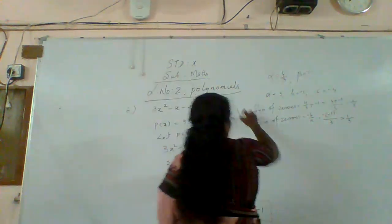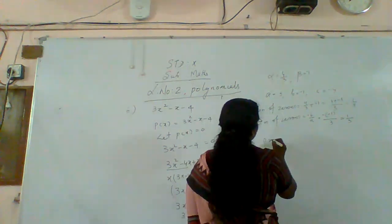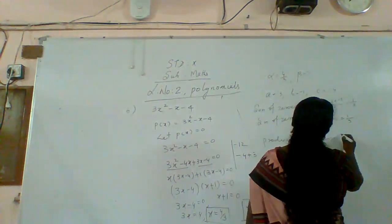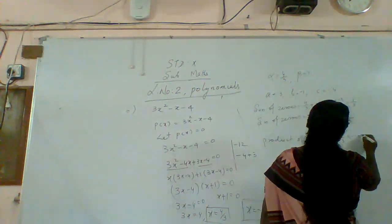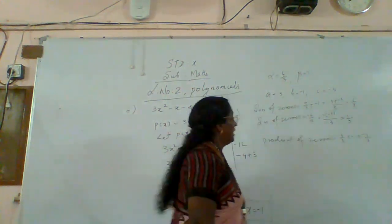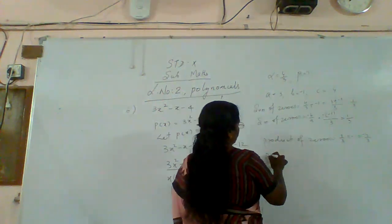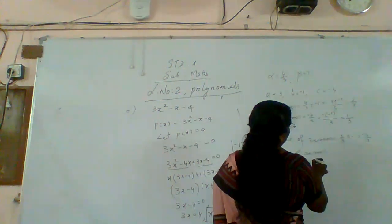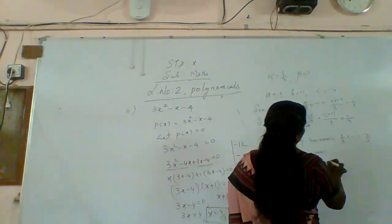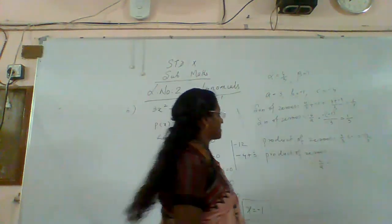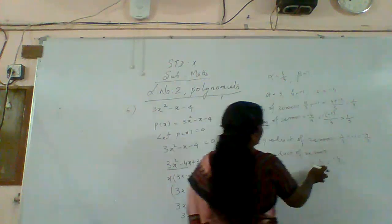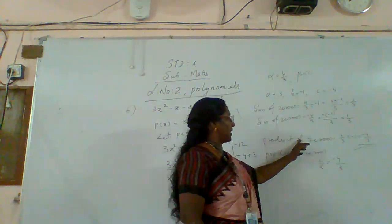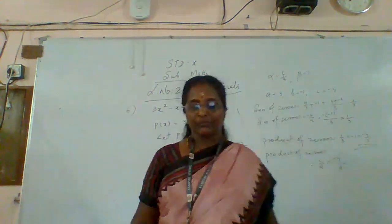Product of zeros equals four by three into minus one, that is minus four by three. By formula, product of zeros equals c by a: c is minus four and a is three, so c by a equals minus four by three. Here also minus four by three. Therefore we have verified that product of zeros equals c by a.